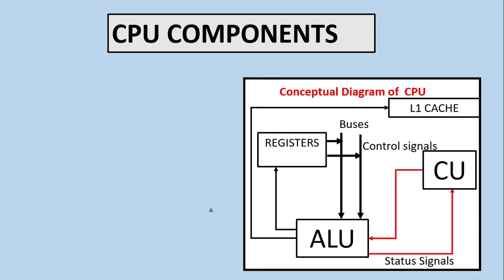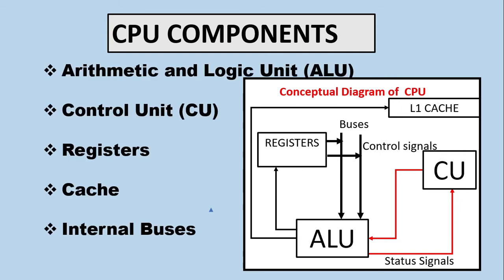CPU components are: arithmetic and logic unit, control unit, registers, cache memory, and internal buses. On the right side is the conceptual diagram of the central processing unit.